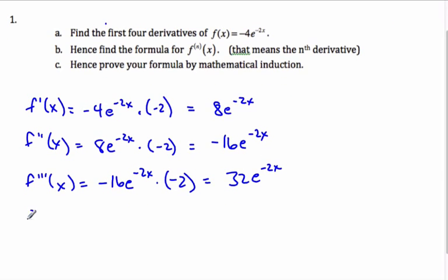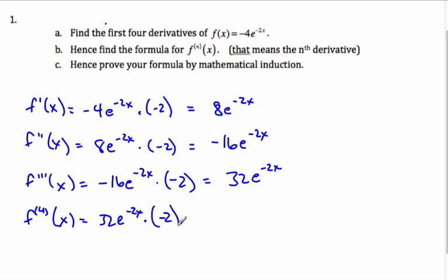Finally, the fourth derivative — we'll put a little 4 there — is 32e to the negative 2x times negative 2, which gives negative 64e to the negative 2x.